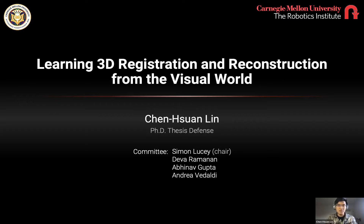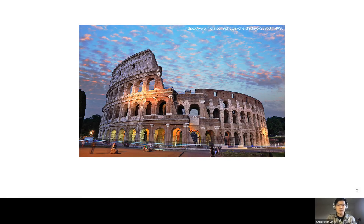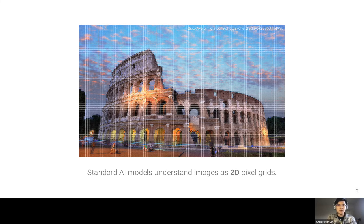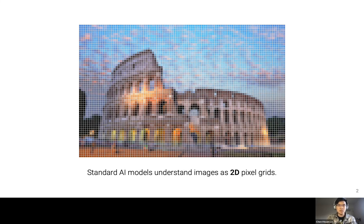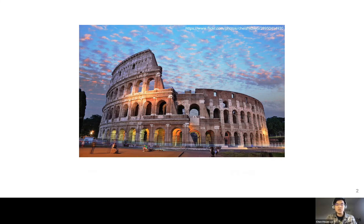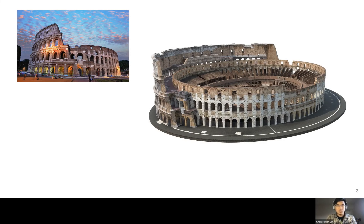Thank you for the introduction. Today I'll be talking about my thesis work on learning 3D registration and reconstruction from the visual world. Consider this beautiful photograph — we can immediately recognize it as the Coliseum. But how do we actually do it? A machine or AI system would treat this image as 2D pixel grids and process it with a 2D convolutional neural network, encoding it into higher-level features. But that's not how we really see images — we're able to identify the underlying geometric structures.